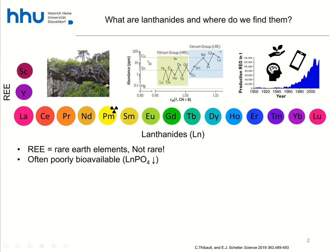The word 'rare' is really misleading. Looking at this graph of element abundance in the Earth's crust, neodymium and cerium — two of the most abundant lanthanides — are just as abundant as copper and zinc. By the way, this is a picture of the Ytterby mine in Sweden, a really cool place where many lanthanides were first discovered, and where lots of rare earth minerals can be found.